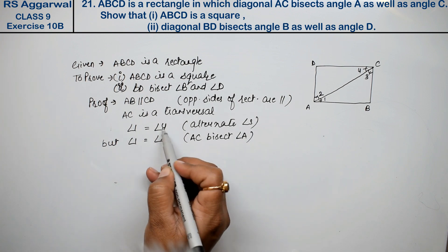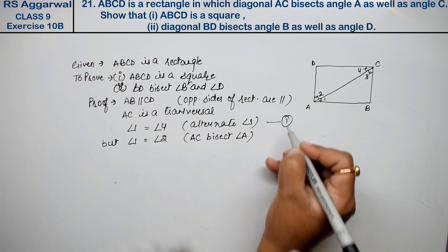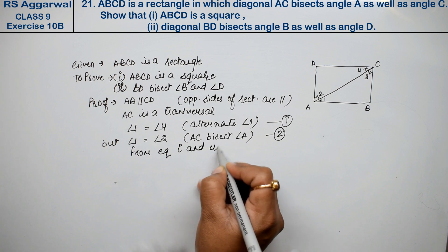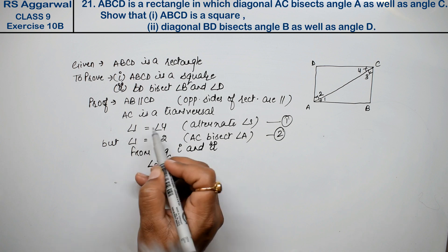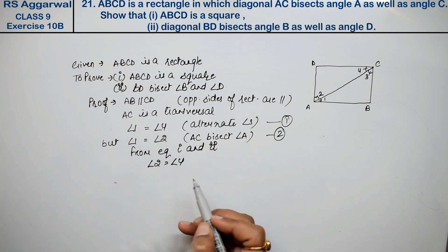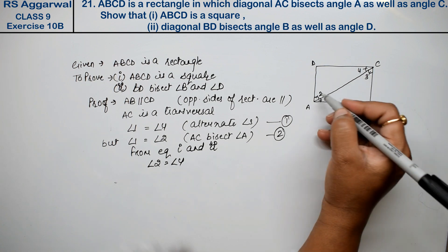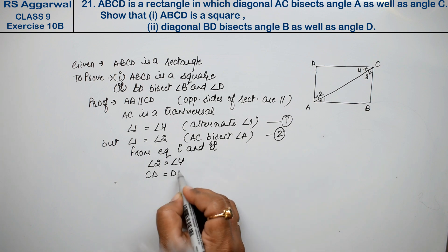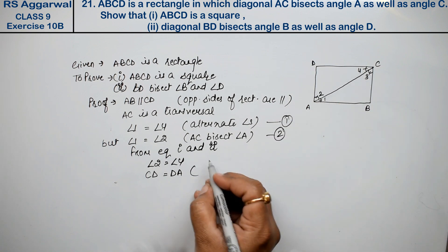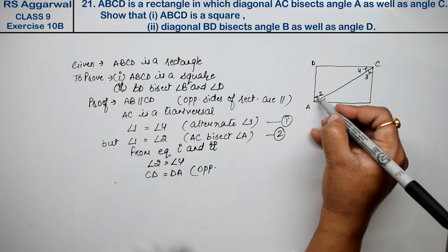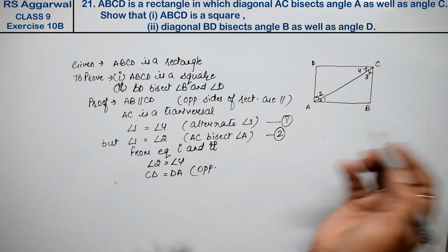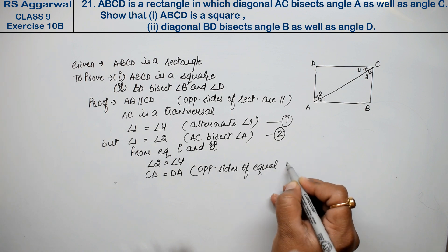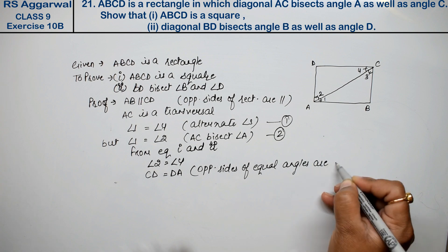अब जब इसके left hand side equal है तो right hand side भी equal होगा. Hence, from equation 1st and 2nd — angle 2 equals to angle 4. जब angle 1, angle 4 के भी equal है और angle 1, angle 2 के भी equal है तो यह भी दोनों आपस में equal होंगे. अब जब angle 2 और angle 4 equal हैं, तो opposite sides of equal angles are equal.